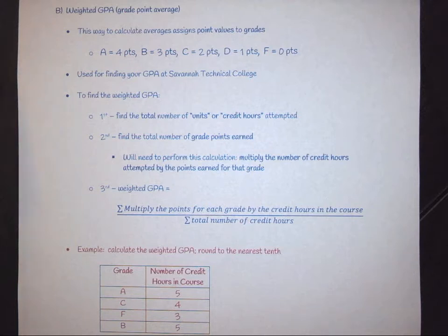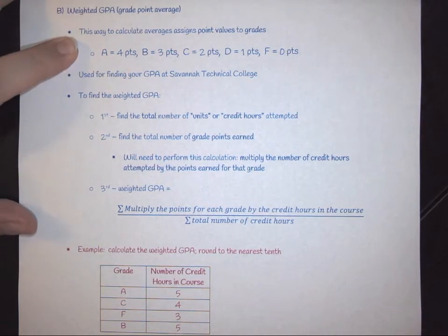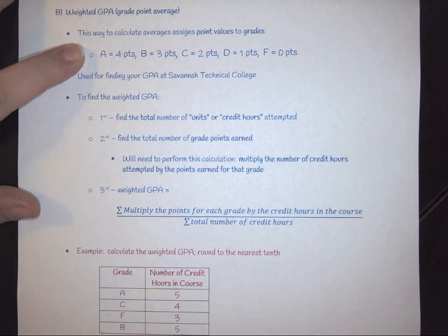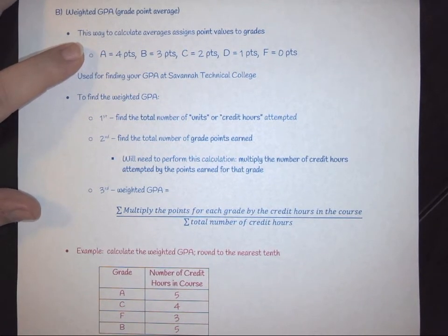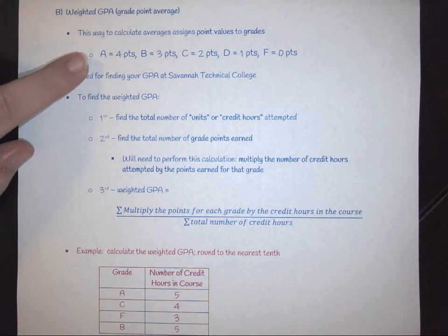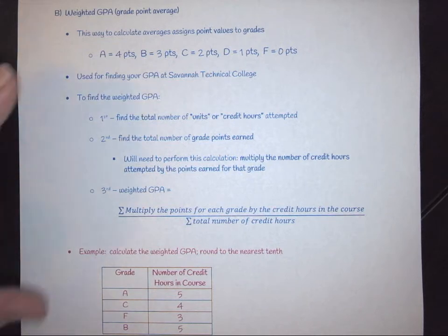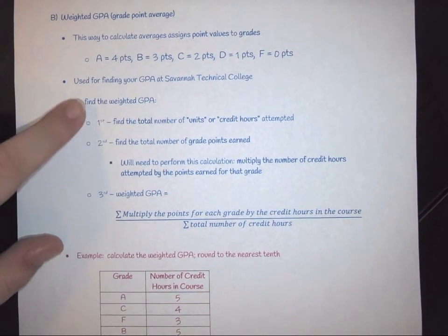The reason you need to know is because that assigns the point values to your grades. So a four-point scale essentially says this: A is worth four points, B's are three, C's are two, D's are one, F is zero.